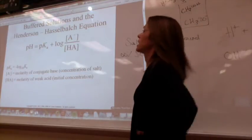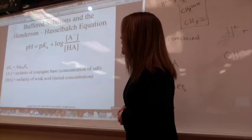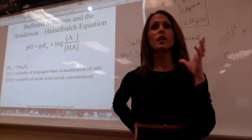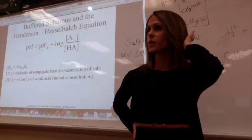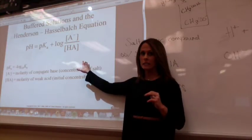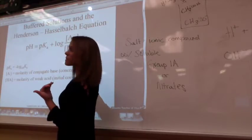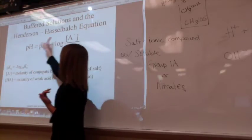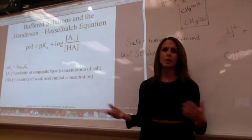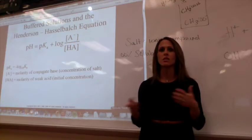This is called the Henderson-Hasselbalch equation, and you're going to use it every time you see the word buffer. It is entirely possible to do buffering questions without this equation — you can also solve using Ka. Ka equals your conjugate base times H+ over your HA, which is where you'll get your pH from. If somebody uses Henderson-Hasselbalch and you used Ka, you might still get the right answer — but could be wrong too.